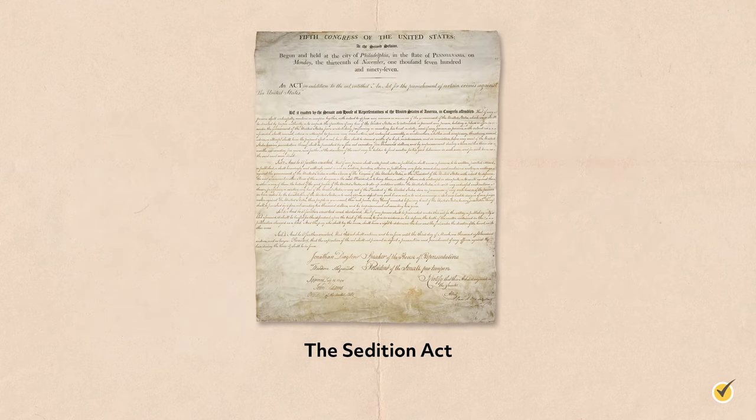The Sedition Act was the most contentious of the laws passed. It stated that any false, scandalous, and malicious writing against the President, the government, or Congress, or any words or actions that caused unrest, would carry a fine of up to two thousand dollars and up to two years in prison. Those who supported the law claimed it was a necessary wartime measure that simply strengthened similar laws that already existed. However, it was seen by most to be a clear violation of the First Amendment and an attempt to silence the Republican press. Benjamin Bache was arrested in June 1798 but died before his October trial.